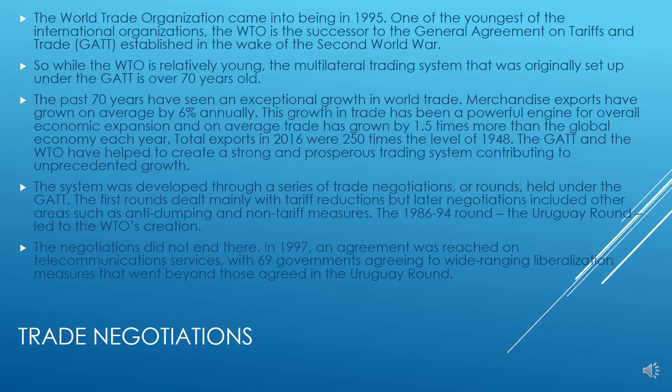On average, trade has grown by 1.5 times more than the global economy each year. Total exports in 2016 were 250 times the level of 1948. GATT and the WTO have helped to create a very strong and prosperous trading system contributing to this unprecedented growth. The system was developed through a series of trade negotiations or rounds held under GATT, with the first rounds dealing mainly with tariff reductions.